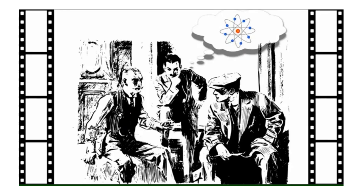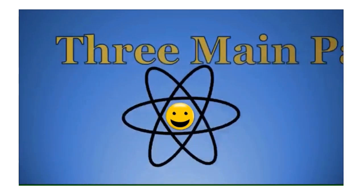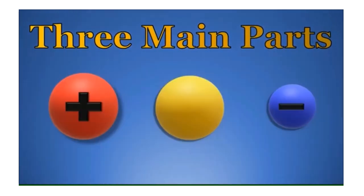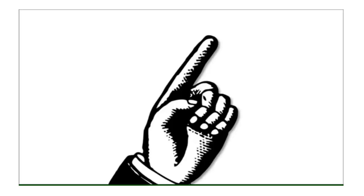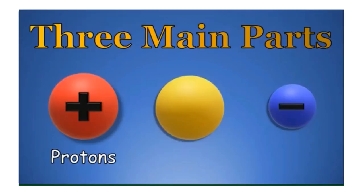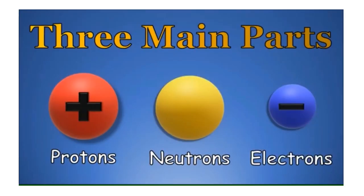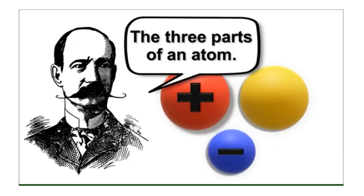To really understand me, we gotta start with the fact that I'm made up of 3 main parts. They're called protons, neutrons, and electrons. One more time — they're called protons, neutrons, electrons. The three parts of an atom.